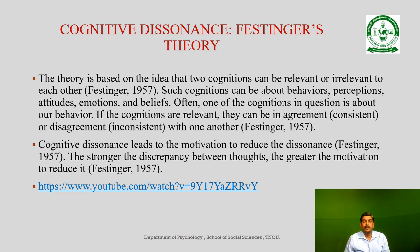Cognitive dissonance in the long run leads to the motivation to reduce the discrepancy. The stronger the dissonance, the greater the motivation to reduce it. If there is a small discrepancy, you may use the principle called the discounting principle and then throw it out. If the conflict or dissonance is high, then you will be more emphatic and more enthusiastic to reduce that cognitive dissonance.